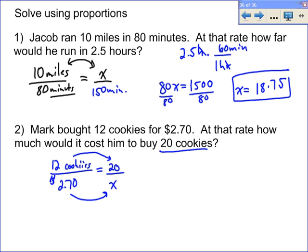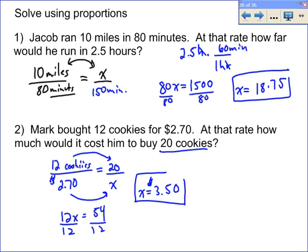Now do the cross product: 12x equals $2.70 times 20, which is $54. Divide both sides by 12, and x equals $3.50.